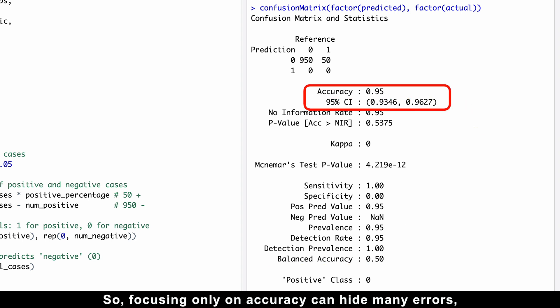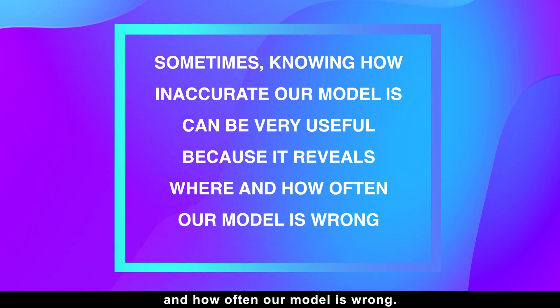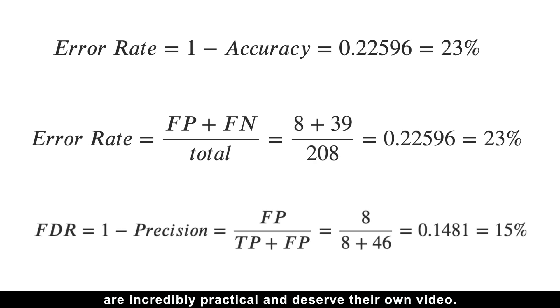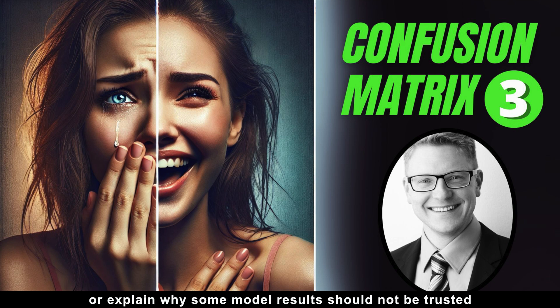So, focusing only on accuracy can hide many errors, leading to poor decisions. Sometimes knowing how inaccurate our model is can be very useful, because it reveals where and how often our model is wrong. Metrics like the misclassification rate and false discovery rate are incredibly practical and deserve their own video. Therefore, if you want to make your models rock-solid and trustworthy, or explain why some model results should not be trusted, you need to watch this video next.